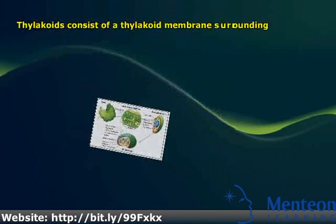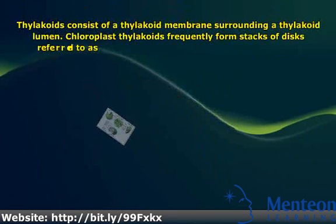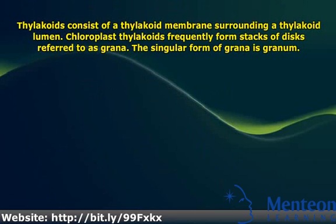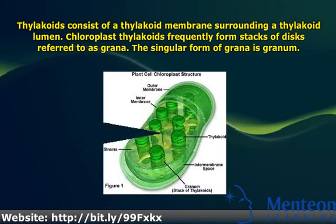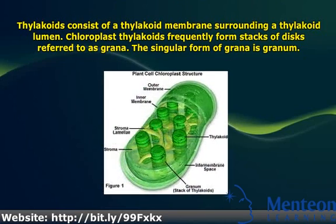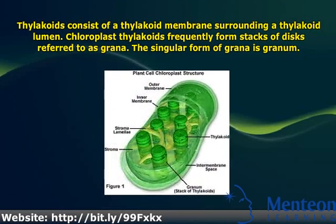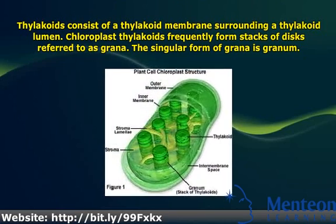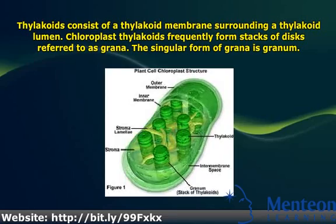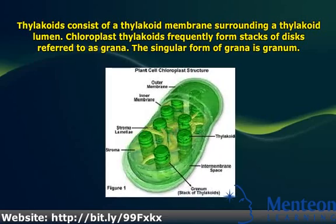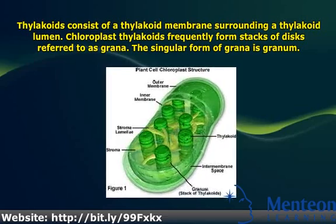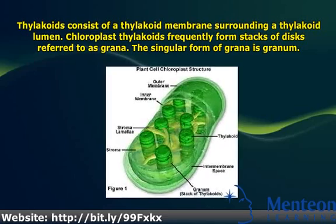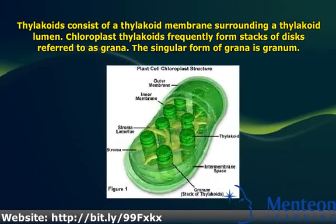Thylakoids consist of a thylakoid membrane surrounding a thylakoid lumen. Chloroplast thylakoids frequently form stacks of discs referred to as grana. The singular form of grana is granum.